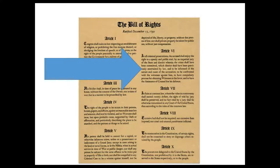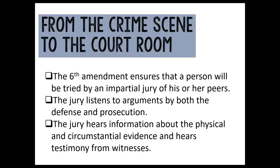We're focusing on Article Six of the Bill of Rights, which states that in all criminal prosecutions, the accused shall enjoy the right to a speedy and public trial by an impartial jury of the state and district wherein the crime was committed. This ensures US citizens will be tried by an impartial jury — fellow citizens who listen to arguments from both the defense and prosecution and hear physical and circumstantial evidence.